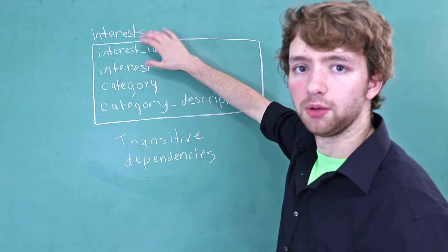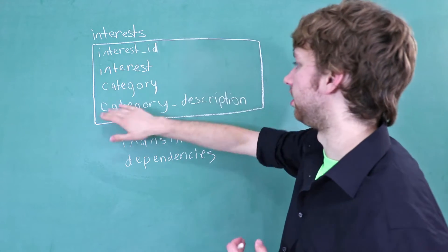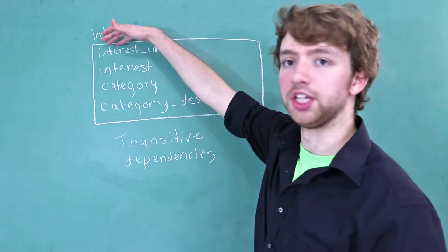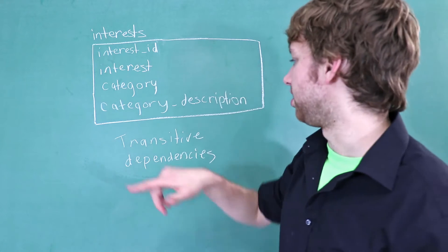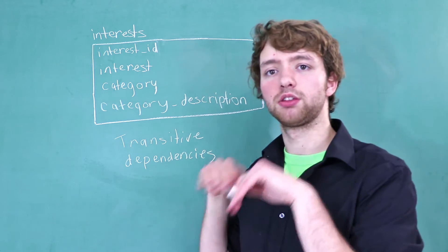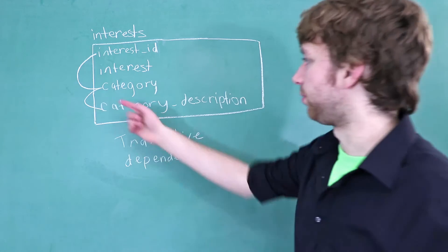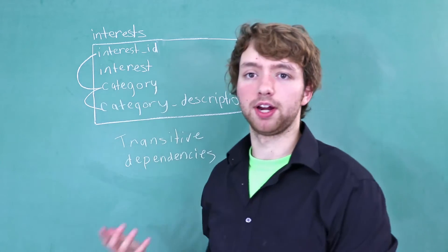So this category description does depend on the interest, but it does it transitively, which means through another column like this. So when you get this hop here, you have a transitive dependency.